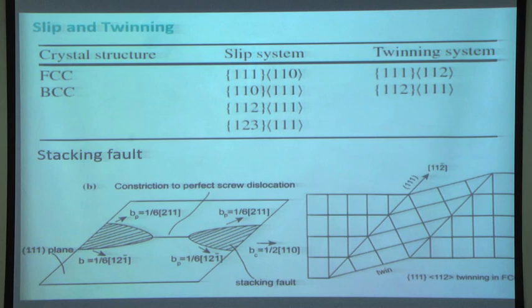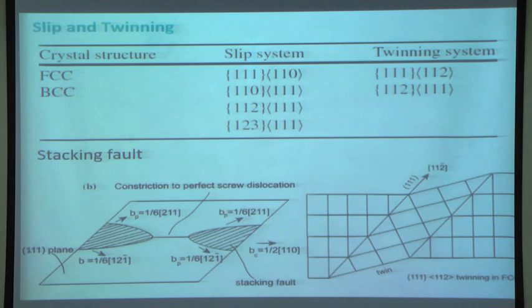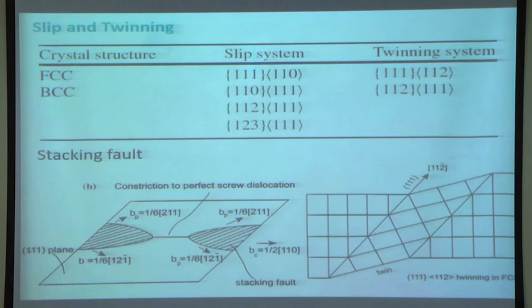In the case of body-centered cubic materials there is pencil glide, and the closest packed direction is always <111>. Depending upon the deformation temperature, we have various slip planes: at lower temperature it is {110}, at higher temperature we have {112}, and sometimes {123} becomes active. Therefore the possibility of slip-based deformation in BCC materials is very high, even though BCC is not as closely packed as FCC or HCP.